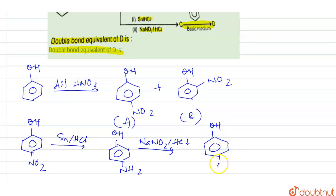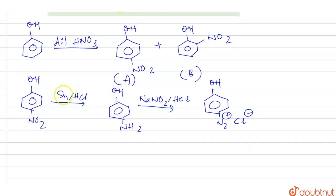Diazonium salt. Hence it will be N2+ and Cl-, which will be a diazonium salt. Now next, given is this compound will be reacting with what?